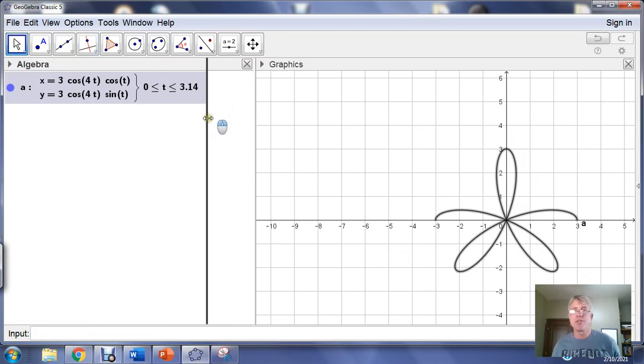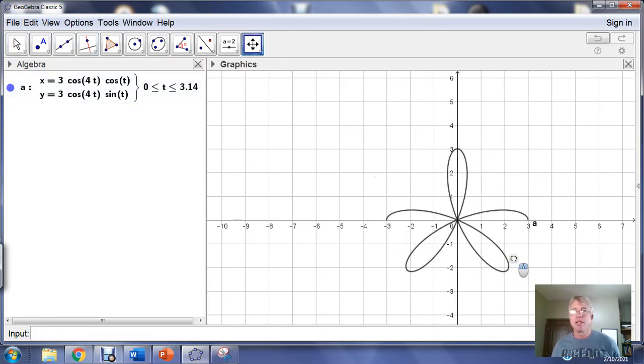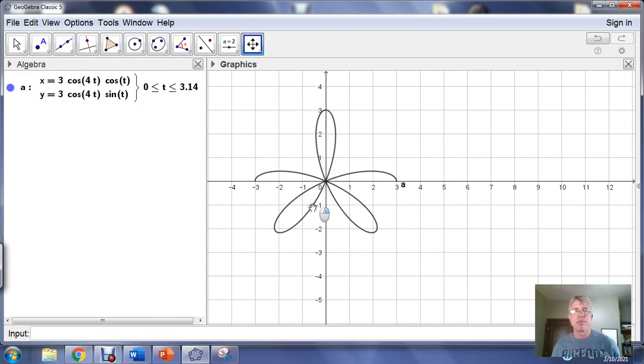What you want to notice is it looks like the graph might be incomplete. It's called the rose curve because it has petals that look like flower petals. In this case it looks like it should be filled in with some additional petals.